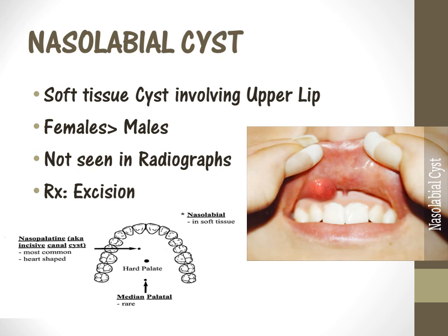Moving on to soft tissue cysts of non-odontogenic origin. One type is the nasolabial cyst, which usually occurs in the upper lip. Females are more commonly affected than males. This type of cyst is a soft tissue cyst, so you cannot see any radiographic changes. The adequate treatment is excision of the cyst. Based on the location, names are given: nasolabial occurs in the soft tissue of the lip; nasopalatine means it occurs in the incisive canal area, usually due to remnants of the incisive canal in the hard palate — it is the most common and is heart-shaped.